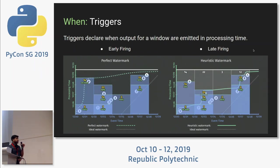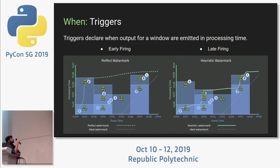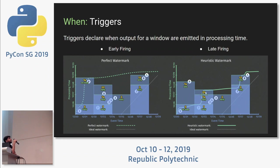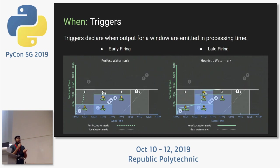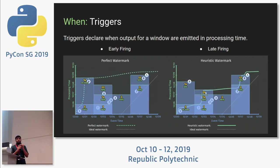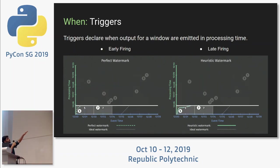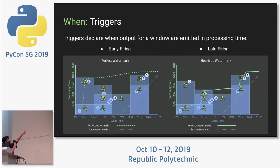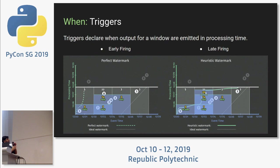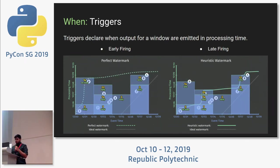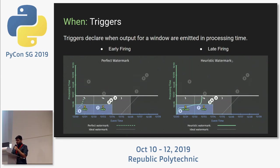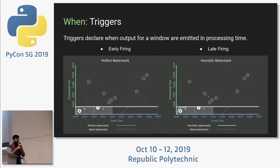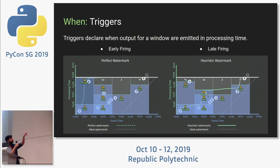Triggers declare when output for a window is emitted in processing time. There are three basic trigger types: on-time, early firing, and late firing. On-time is the default trigger. Early firing says 'I expect more input but here is an early result.' In the first diagram, 14 is the on-time trigger result when the watermark closes. Late firing occurs when data arrives after the on-time trigger has fired — in the second diagram, 9 is treated as a late trigger when using a heuristic watermark.